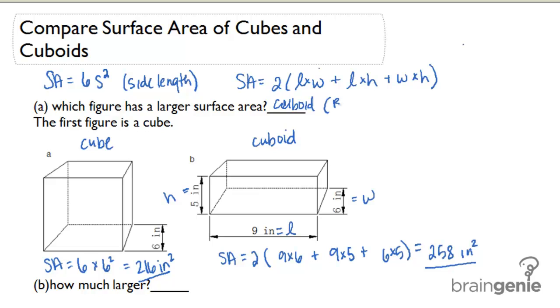And in this problem the cuboid is figure B. The second part says how much larger? Well we can figure out how much larger it is using subtraction. So if I do 258 minus 216 I get 42 square inches. So figure B is larger than figure A by 42 square inches.